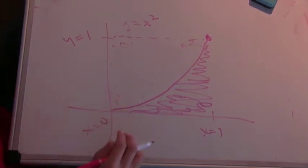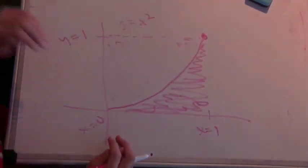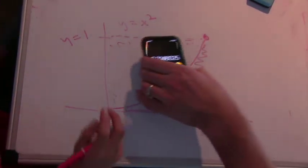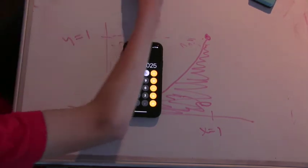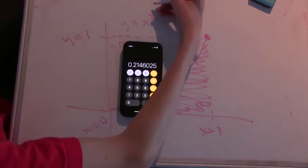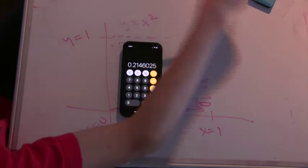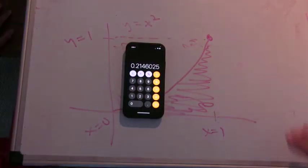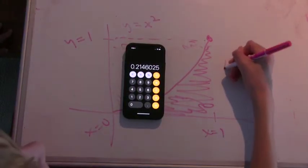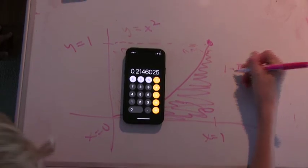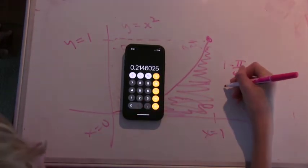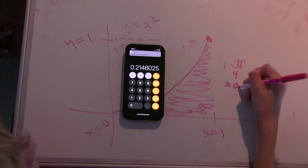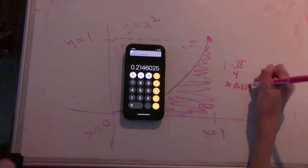So I guess this would be 1 minus pi over 4, because this whole square we found is 1. Okay. And so that's what that would be. Right a little bit lower down than that. Or maybe just over here. 1 minus pi over 4, and that's about 0.214.